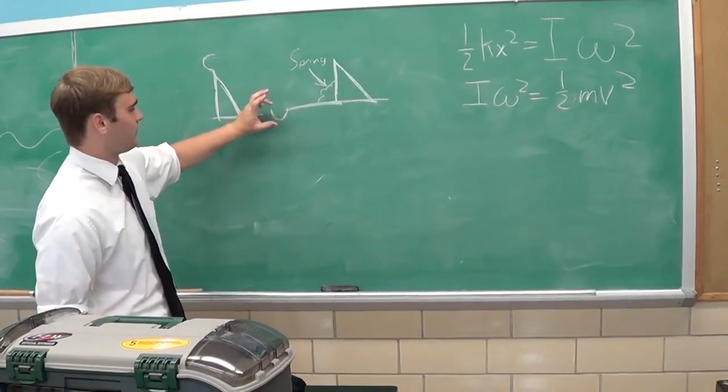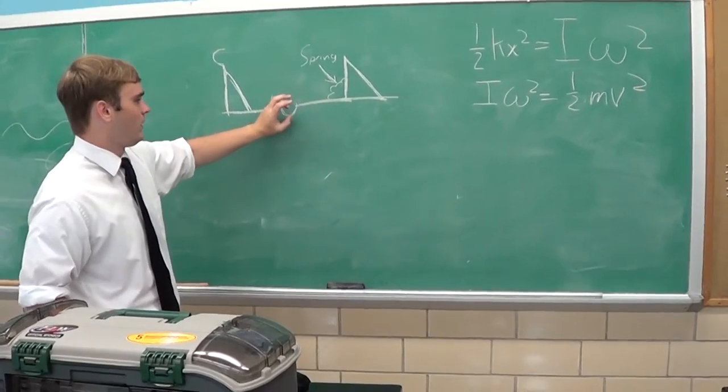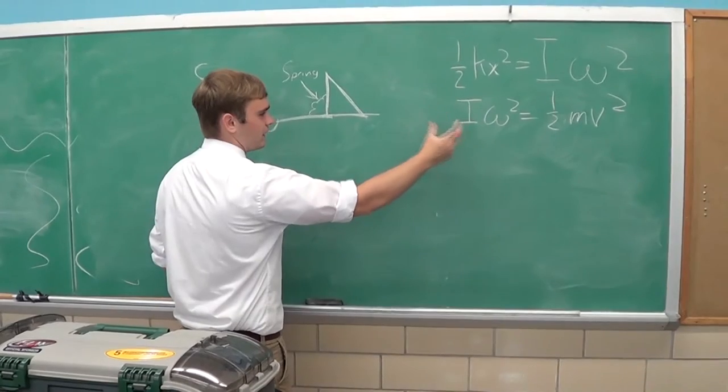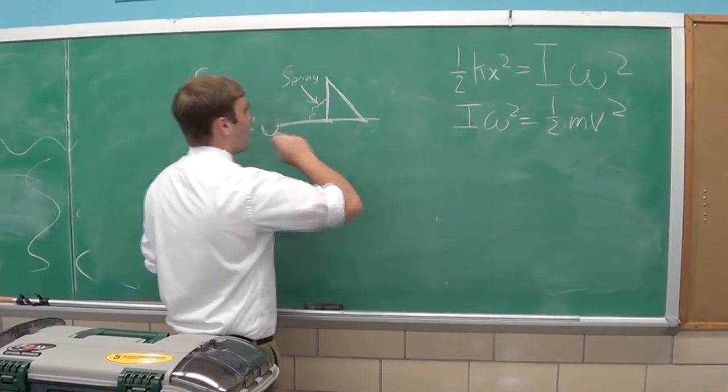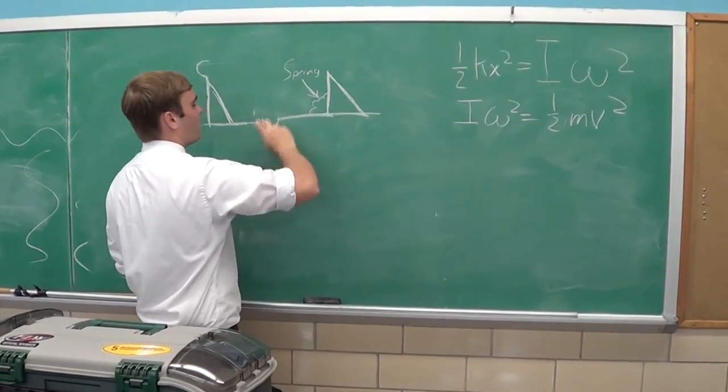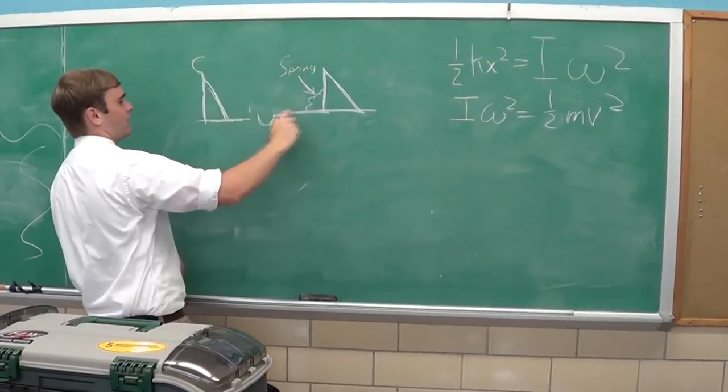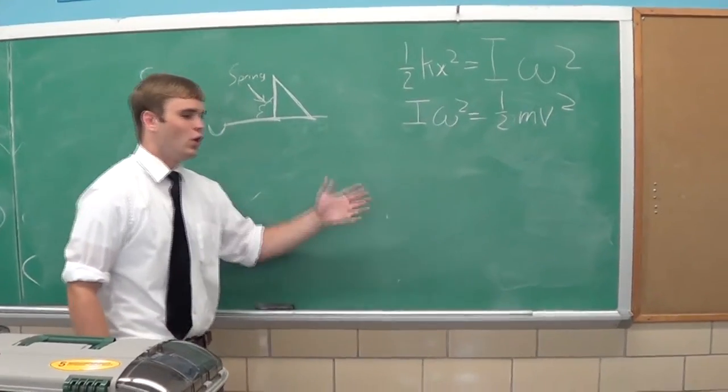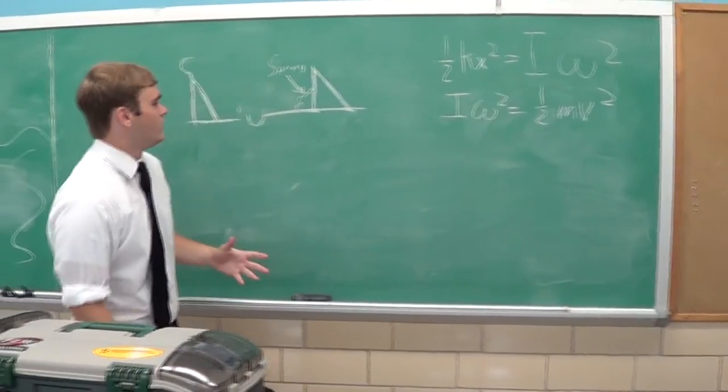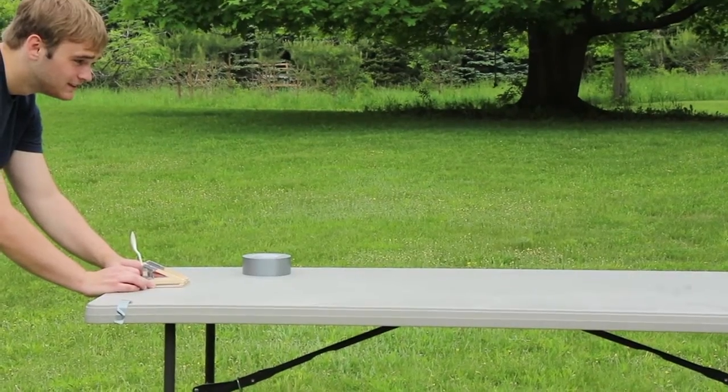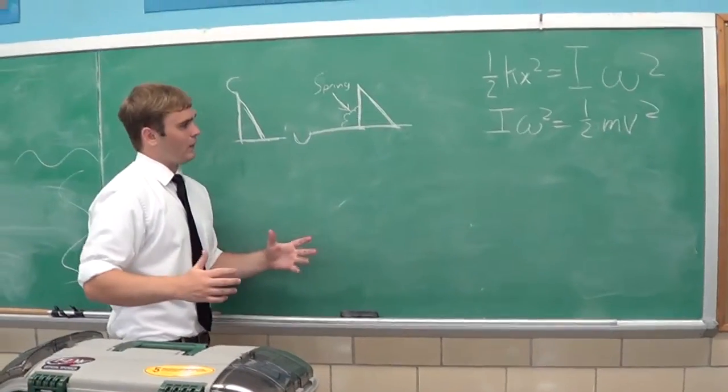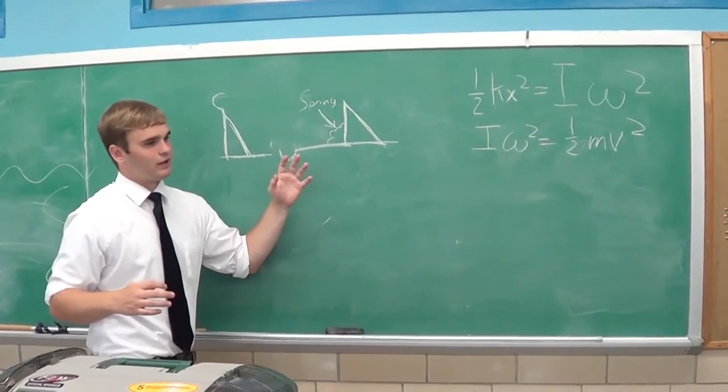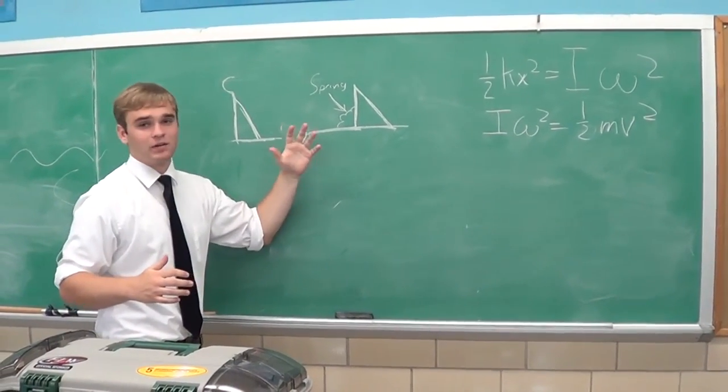And say you have an object in here like a rock that's being thrown. At first it has this angular kinetic energy right here. But once it's released from the catapult, once the catapult gets from here to here and the rock is released, it becomes half mv squared, which is linear kinetic energy. So this is how, basically this is how a catapult turns potential energy into linear kinetic energy.